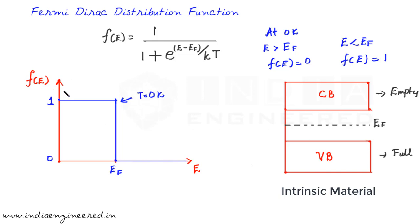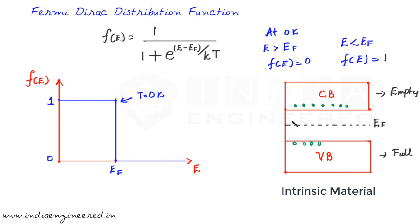The important question is: what happens as temperature increases? As temperature increases, valence band electrons move to the conduction band, creating vacant states in the valence band. That means there should be some probability — even if very small — of finding an electron in the conduction band. So as temperature increases, there are electrons in the conduction band and empty states in the valence band.